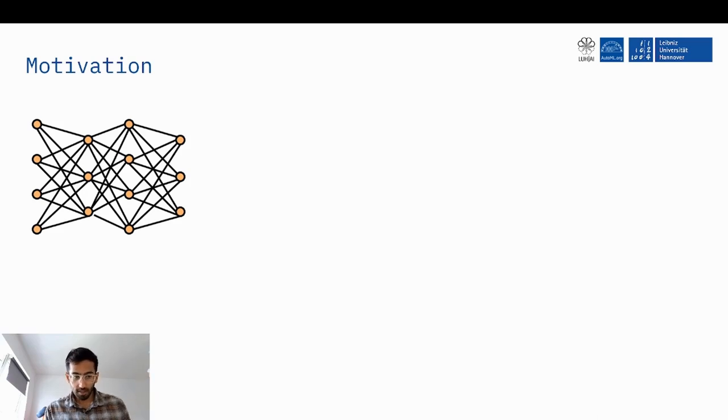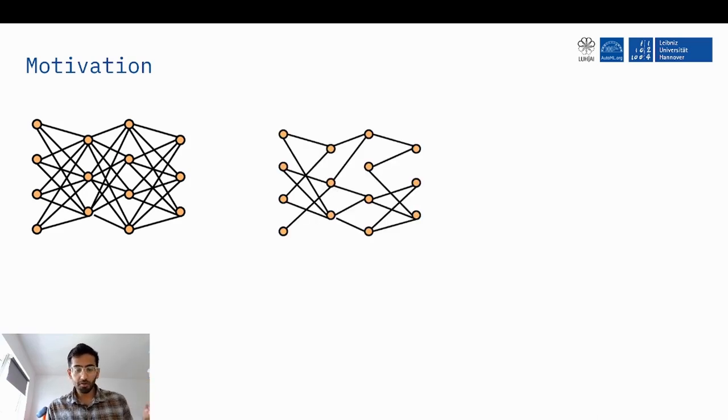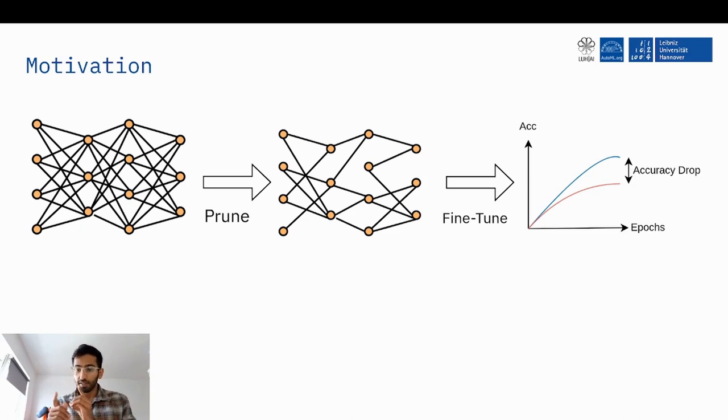Pruning usually involves taking a dense network and removing the unimportant weights and biases till we have a desired level of sparsity and then fine-tuning this network, i.e. retraining it to get to comparable performance as the original network.